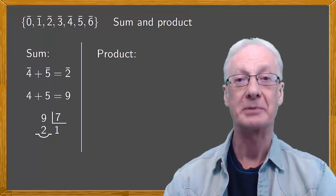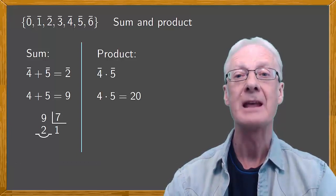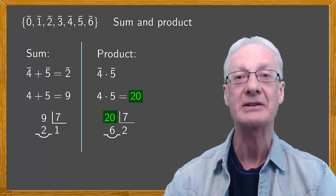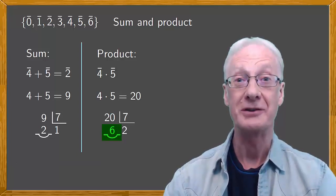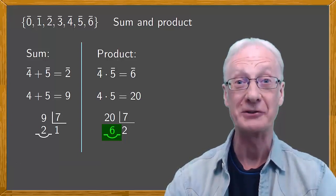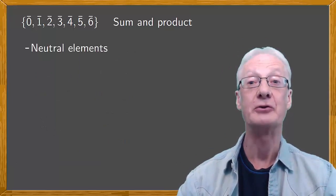In the case of multiplication, for example, four times five equals 20. And again, we reduce modulo seven, 20 divided by seven gives a remainder of six, which in the topsy-turvy world of modular arithmetic is our result.